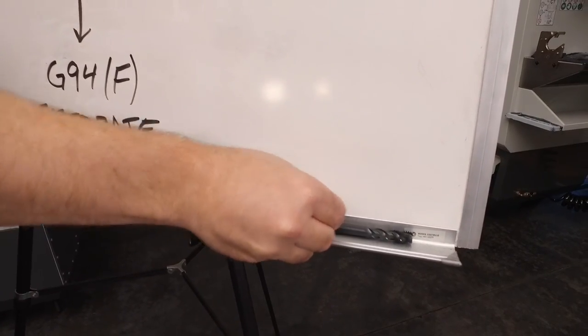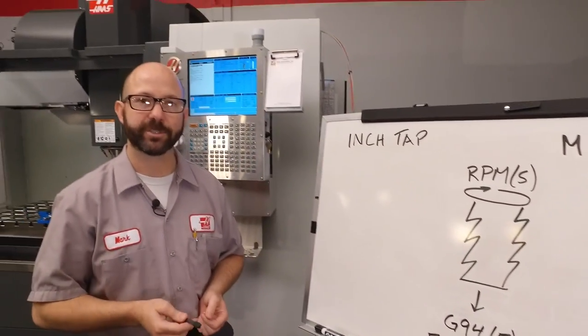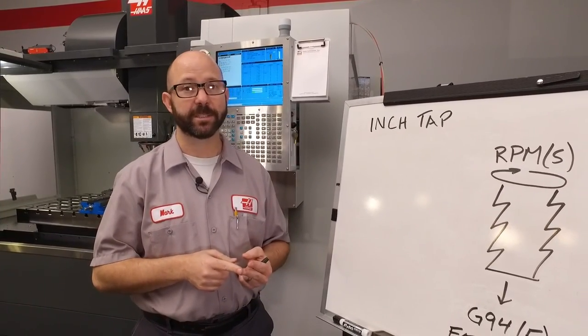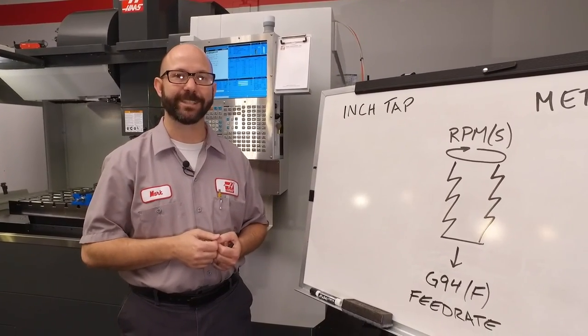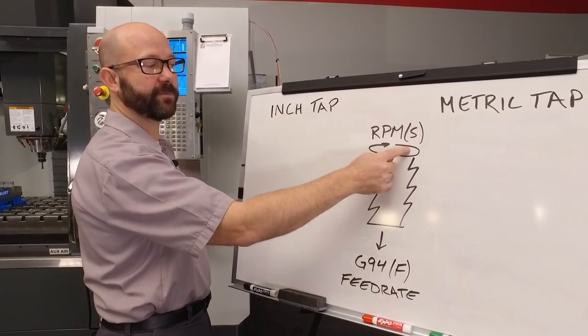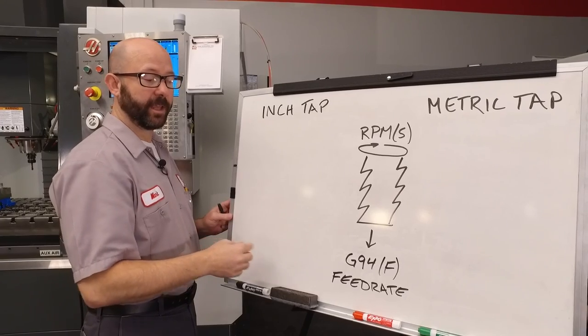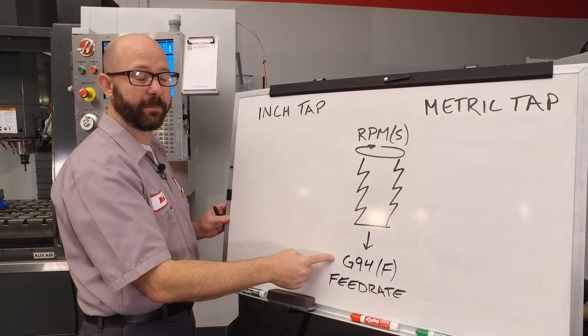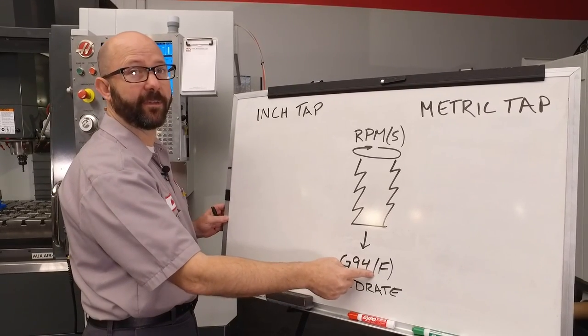We'll come back to this metric tap in a minute. Right now we're going to focus on writing a program for our inch tap. Now there are two critical pieces of information that our G84 tapping cycle needs. The first is our RPM, our S value. The second is our G94 inch per minute feed rate, our F value.